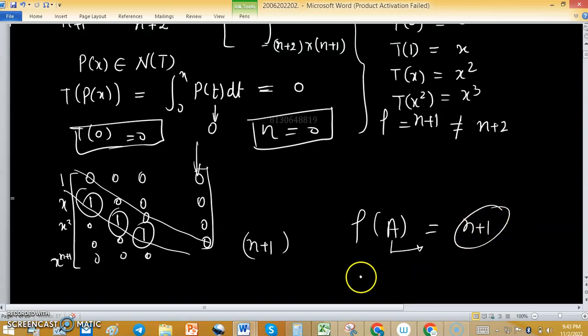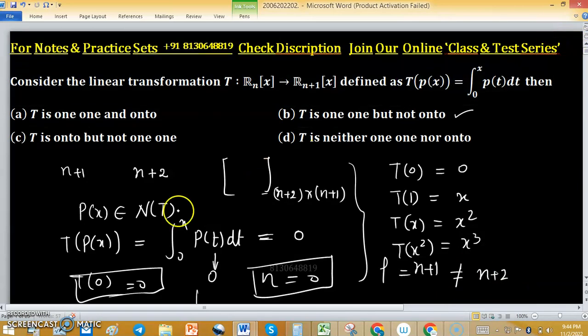Since rank is n+1, by the rank-nullity theorem, the nullity of this linear transformation will be 0. Using this concept, you can also find which option is correct.